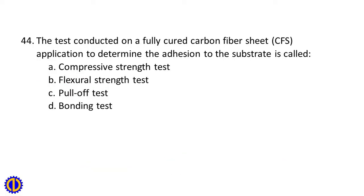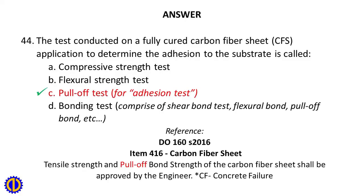Question 44: The test conducted on a fully cured carbon fiber sheet application to determine the adhesion to the substrate is called A. Compressive strength test, B. Flexural strength test, C. Pull-off test, D. Bonding test. Answer: C. Pull-off test. Reference: D-0160S 2016, Item 416 Carbon Fiber Sheet — Tensile strength and pull-off bond strength of the carbon fiber sheet shall be approved by the engineer.